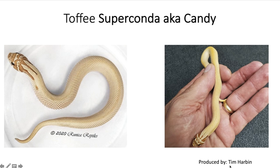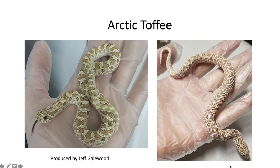Now let's get into the second type of incomplete dominant gene of hog nose snakes — the arctic gene. It gives a lot of contrast between the pattern and the background, and usually the outline of the pattern is highlighted in black or melanin, with little flakes of melanin around the pattern. All these pictures of the arctic toffee are going to be from Jeff at JMG Reptiles — he's the one that discovered the arctic gene.